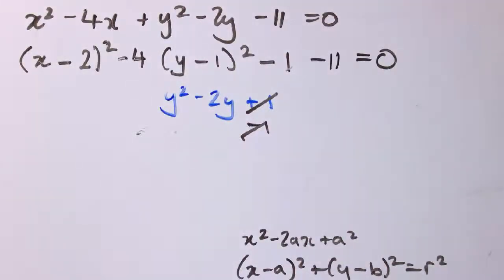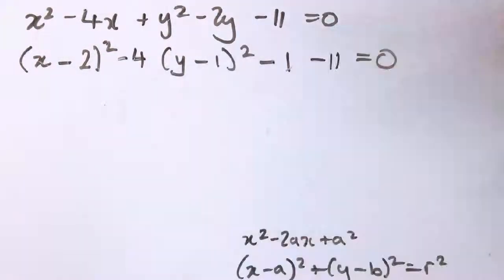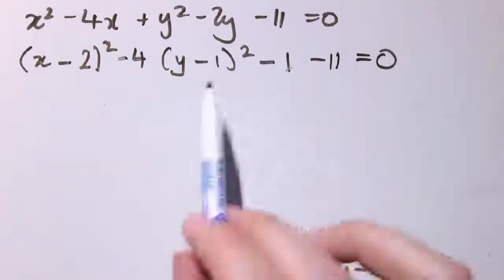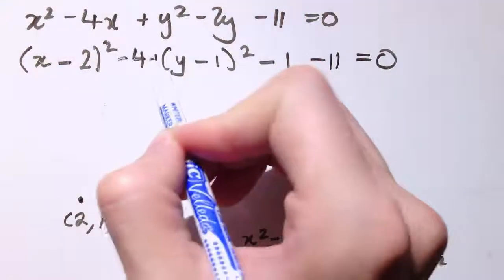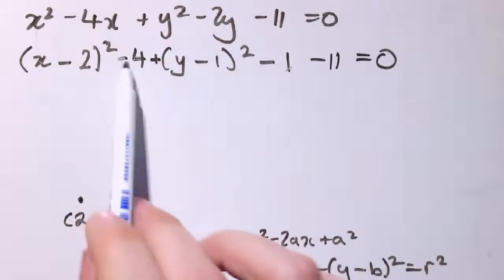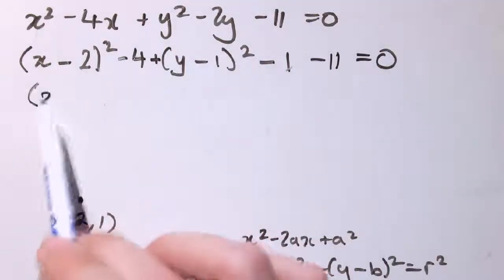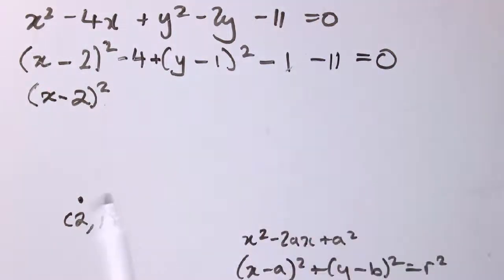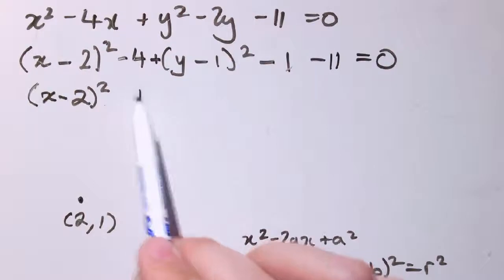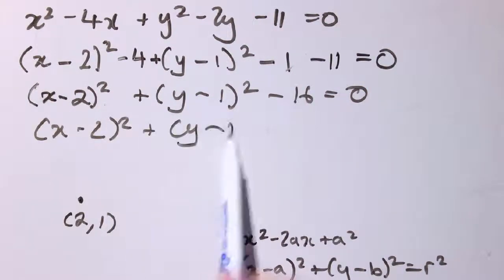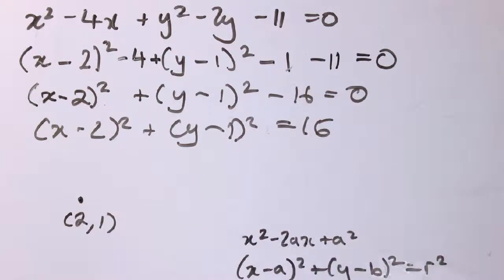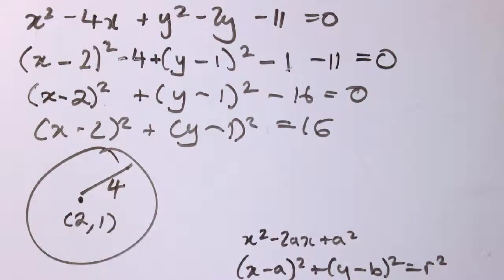So I've completed the square separately in x and y. a comes out as 2 and b as 1, so if this is a circle it's going to have centre (2, 1). We have x minus 2 squared minus 4 plus y minus 1 squared minus 1 minus 11 equals 0. Collecting those terms: minus 4 minus 1 minus 11 is minus 16. So this is x minus 2 squared plus y minus 1 squared equals 16. The radius is the square root of 16, so this is a circle with centre (2, 1) and radius 4.